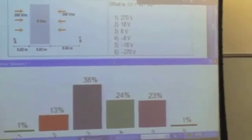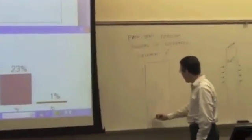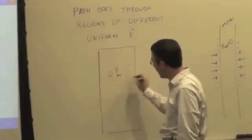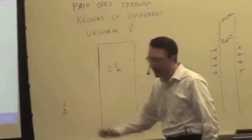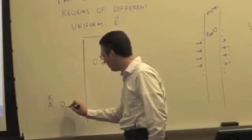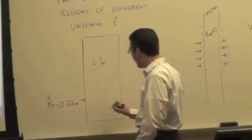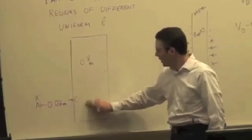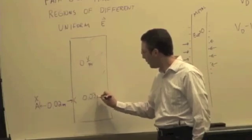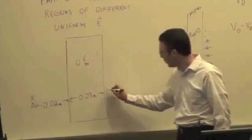We have a situation where you have 0 volts per meter inside this metal block. And A is here and it's 0.02 meters away from the surface. This distance is 0.03 meters. And then the distance from the surface to B is 0.04.